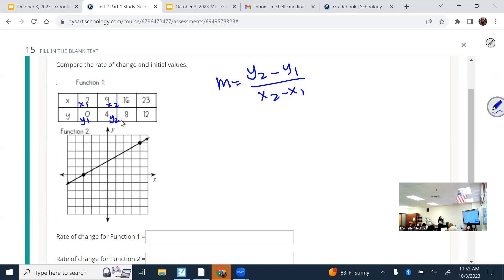So I'll pick the first set, x1, y1, and then pick another one to be x2, y2. So it doesn't really matter as long as the x's are your x's and the y's are your y's, and then pair them x1, y1, x2, y2. So the way that I labeled it this way, my y2 is 4, my y1 is 0, my x2 is 9, my x1 is 2. What's 4 minus 0? What's 9 minus 2? So my rate of change for the first one is 4 over 7.